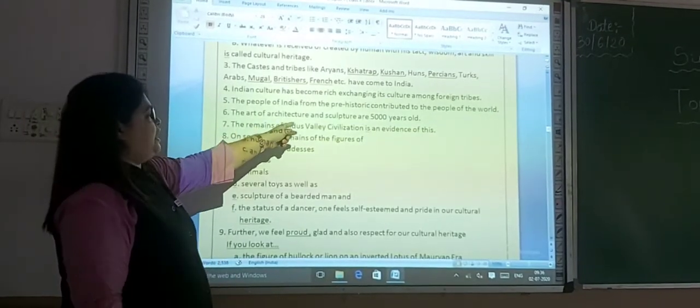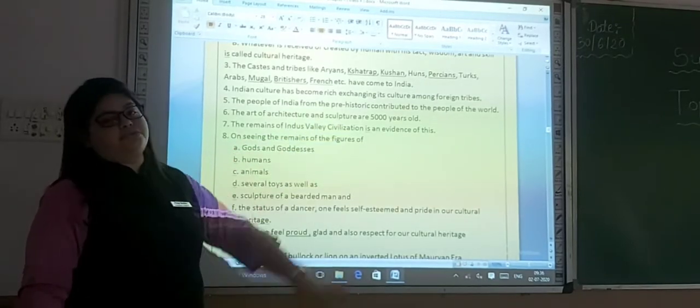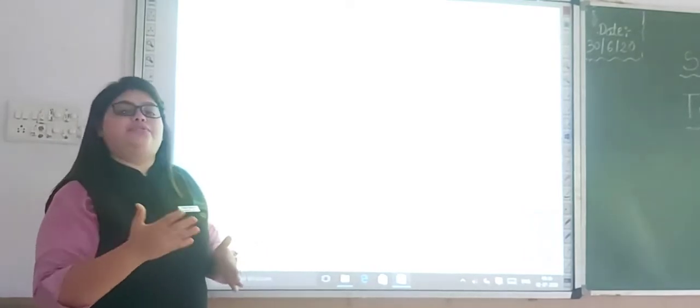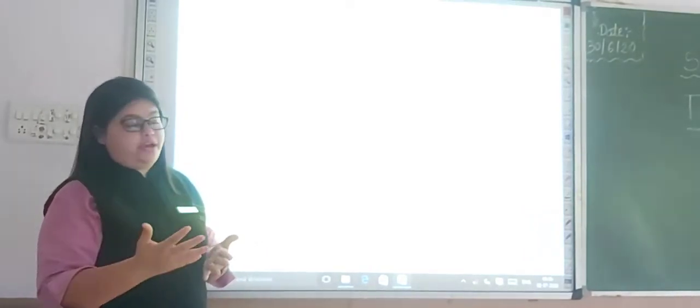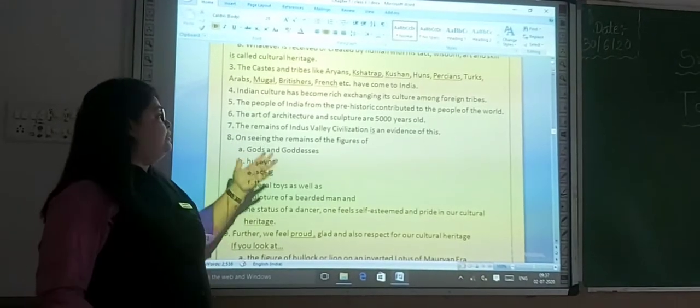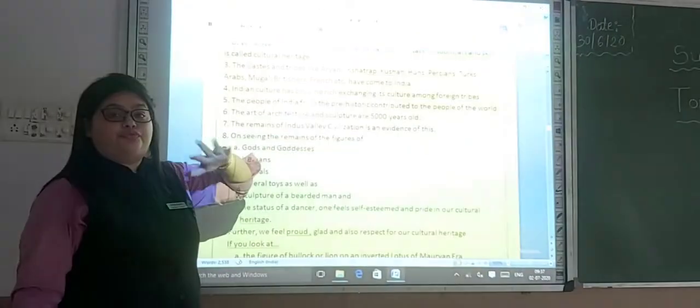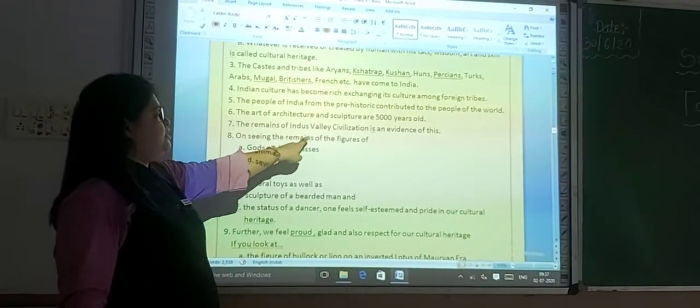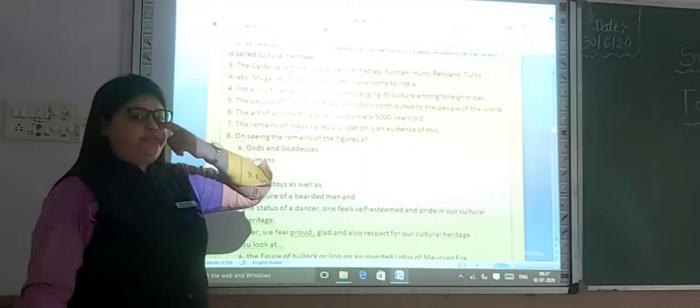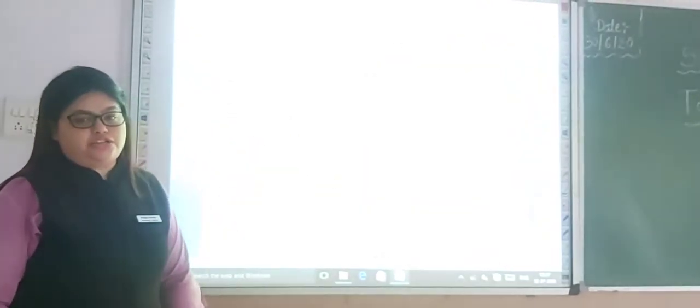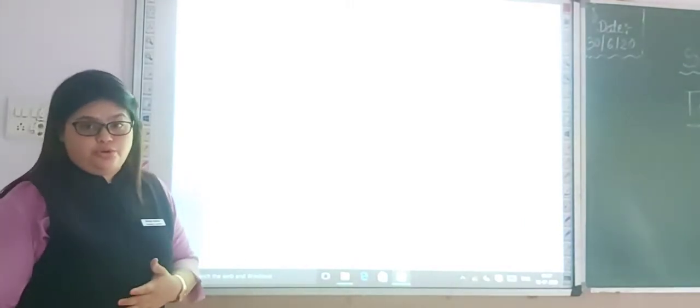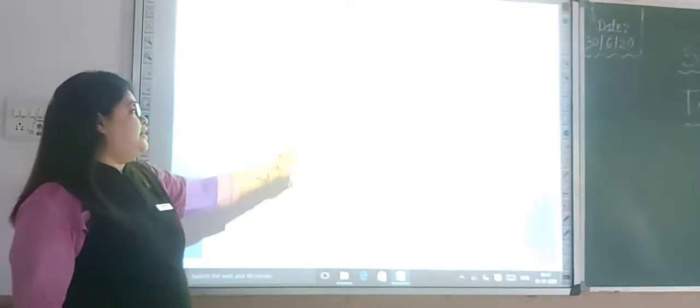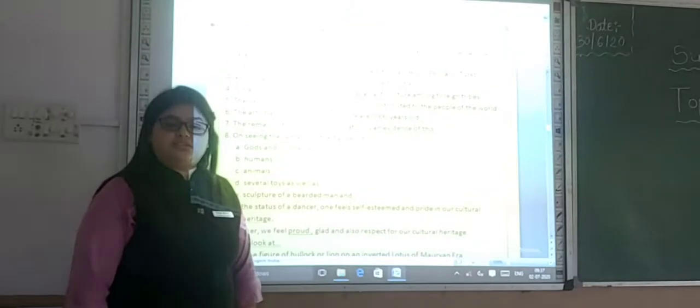The art of architecture and structures are 5,000 years old. We all know you heard about the names of Rig Veda, Yajur Veda. And this Veda is very old and through that, the architecture and structure is also 5,000 years old. The remains of Indus civilization, the remains of Indus civilization is an evidence of this. You all know about this Indus civilization. It is an evidence that our culture, our structure is 5,000 years old.